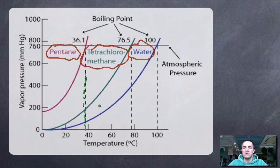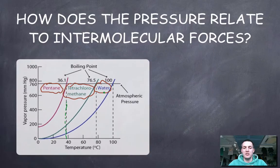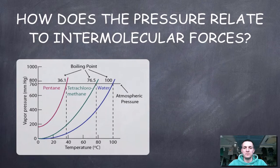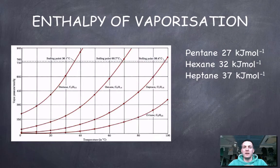To decide which liquid will have the lowest or highest vapor pressure, you need to consider its intermolecular forces and have an understanding of the bonding topic so you can identify what intermolecular forces are present. This actually brings together quite a lot of different understanding.